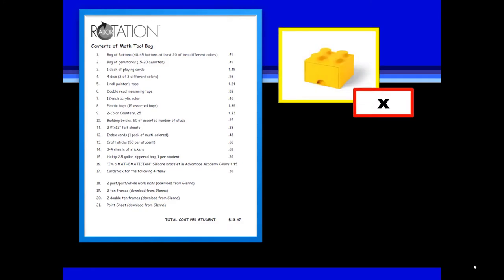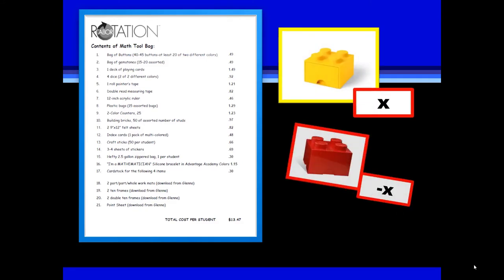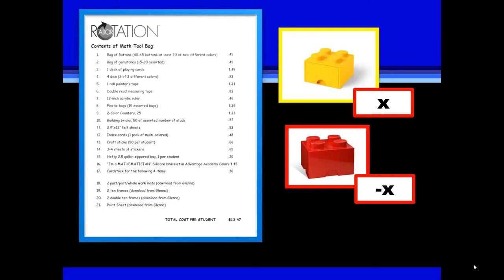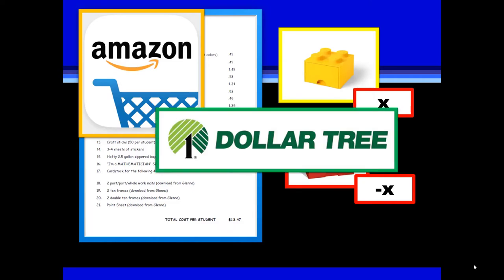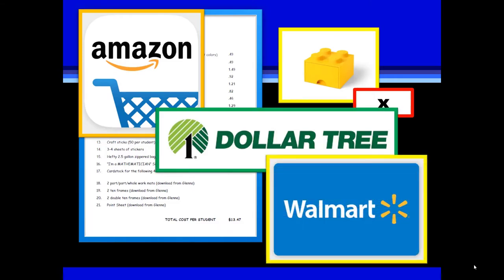If you don't think these tools will be important to high school students, ask a high school student who's finally held something concrete to illustrate a positive and a negative variable. When this update was edited, Amazon, Dollar Tree, and Walmart had the best prices for the items.